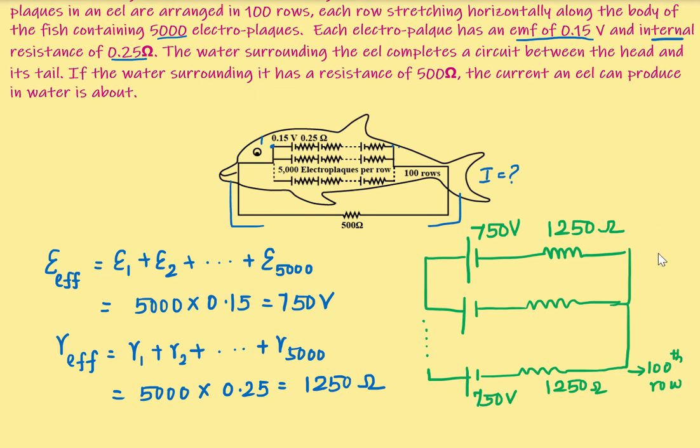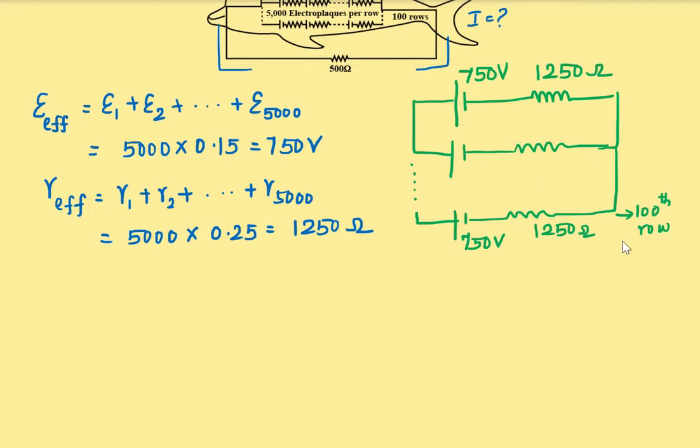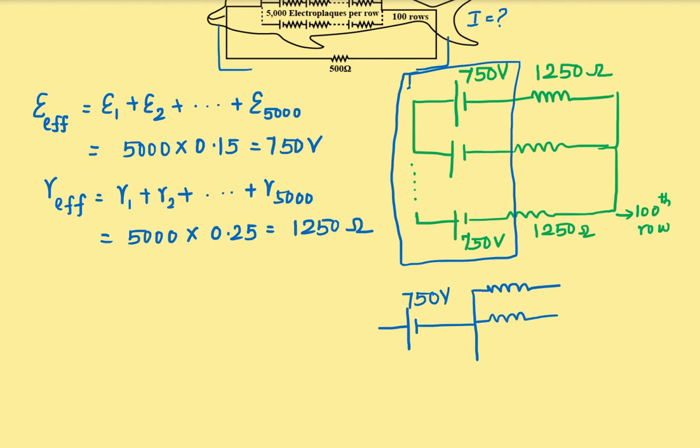Now we can draw another equivalent circuit because if you see this part is actually 750V and it is connected to parallel connection of resistors. So you can draw in this way. This is the 750V EMF and it is connected with parallel resistors like that.